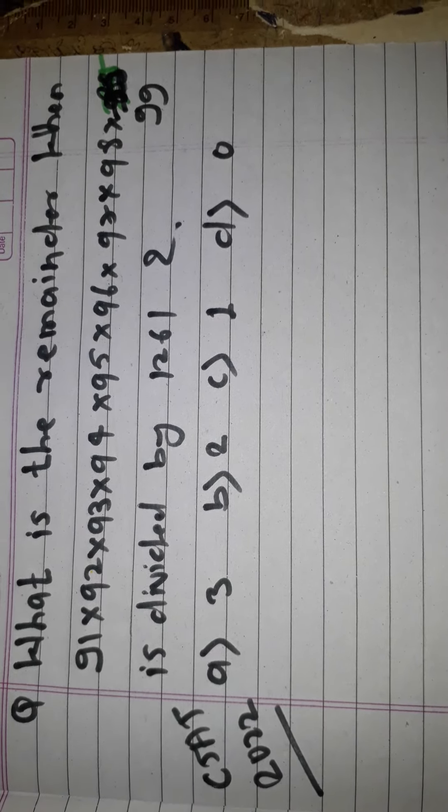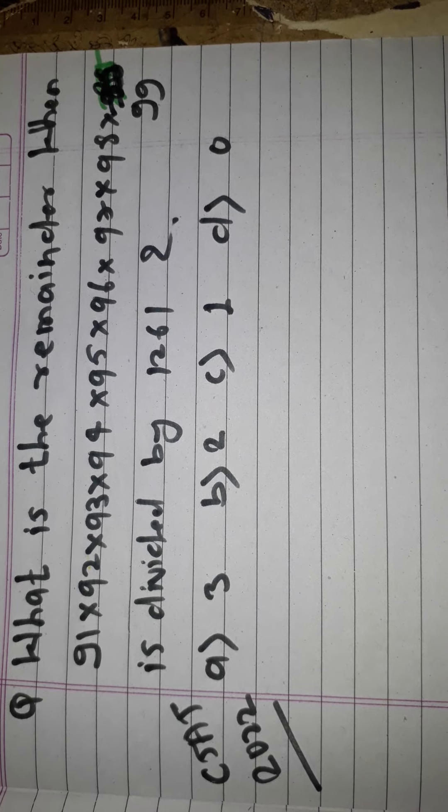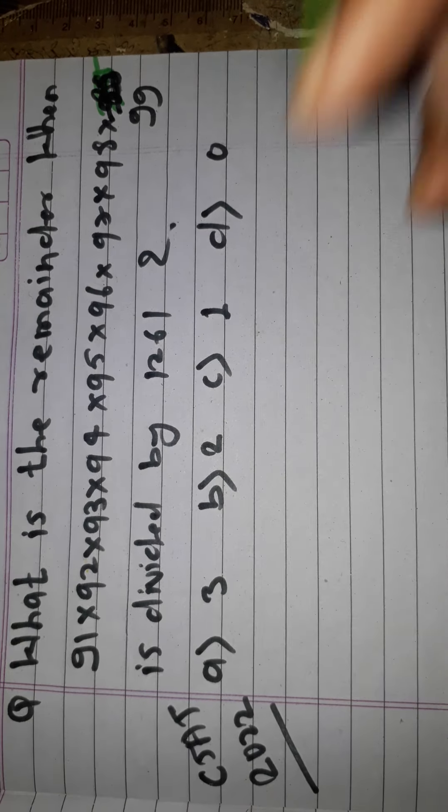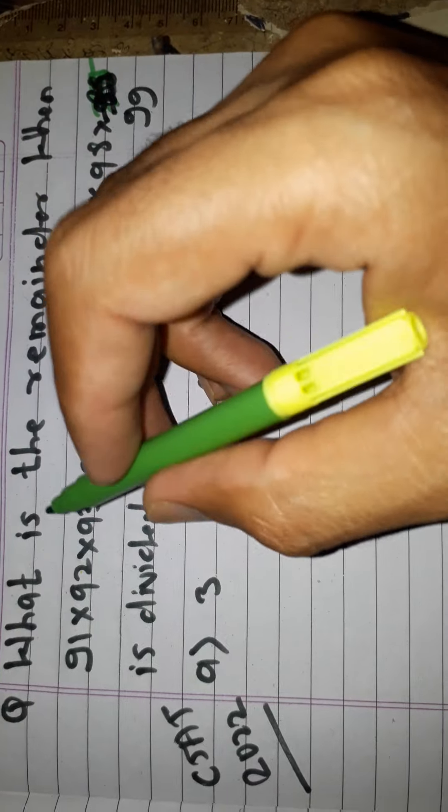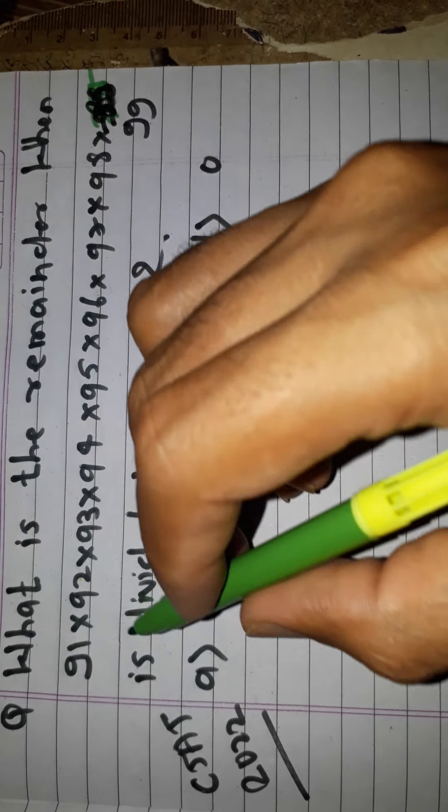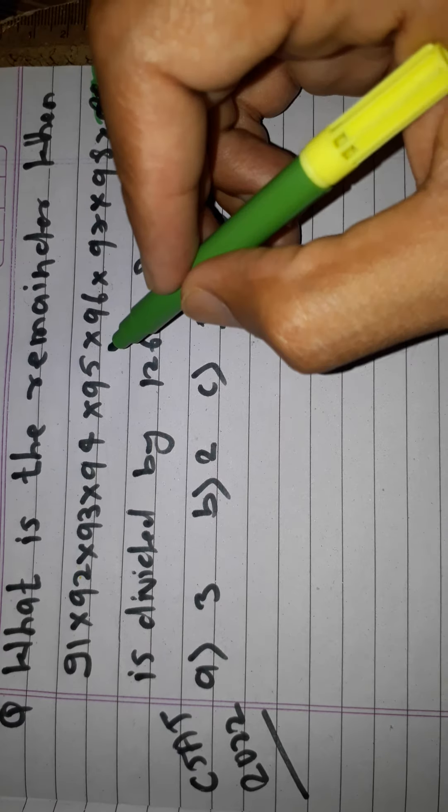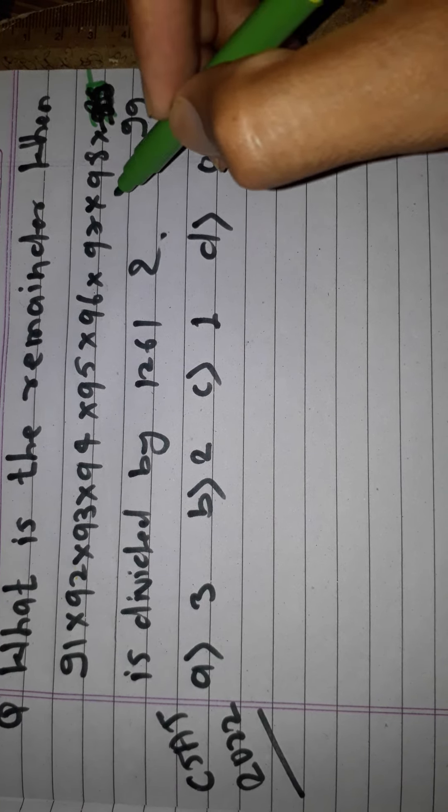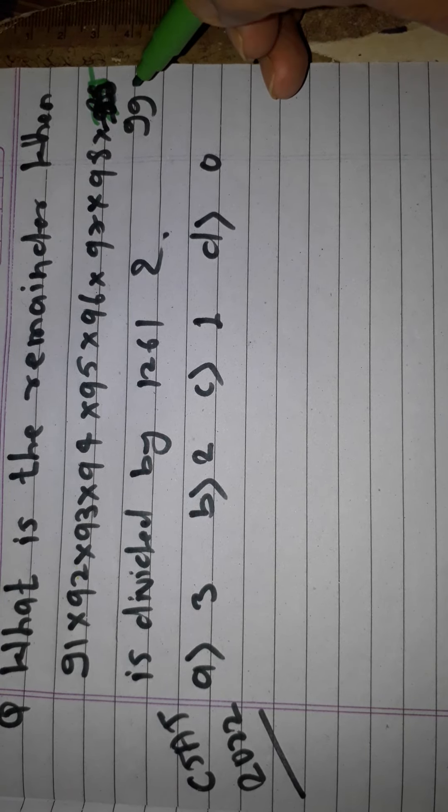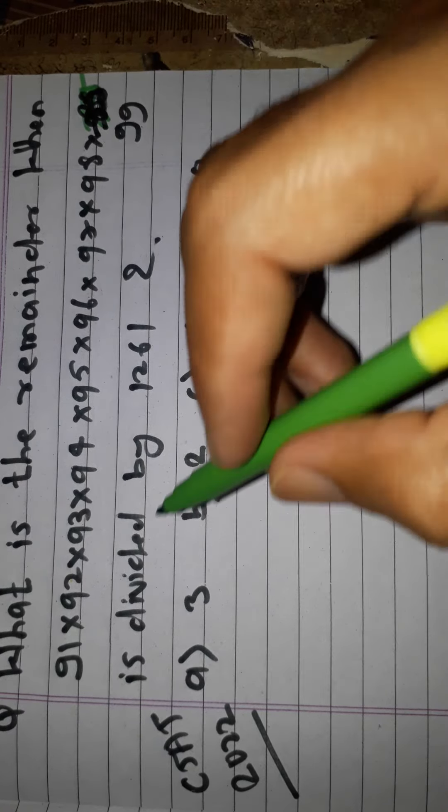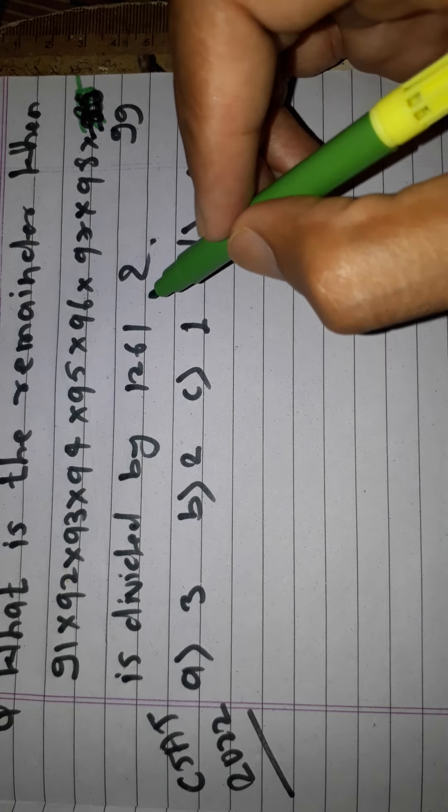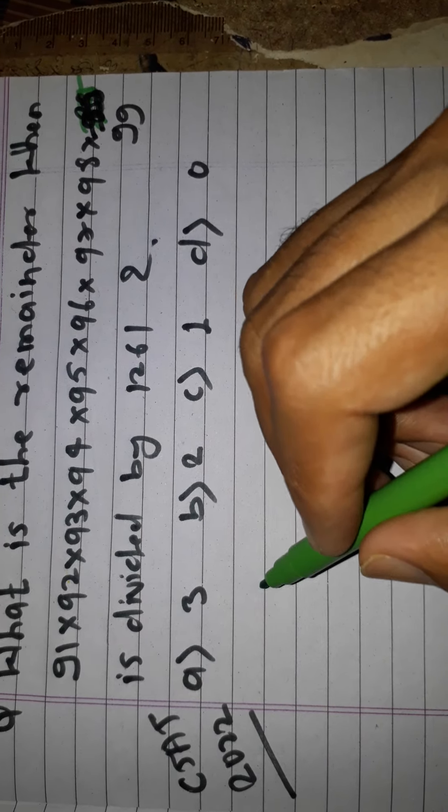Hello friends, today we are going to discuss a new topic. This question came in UPC prelims 2022. The question is: what is the remainder when 91 × 92 × 93 × 94 × 95 × 96 × 97 × 98 × 99 is divided by 1261?